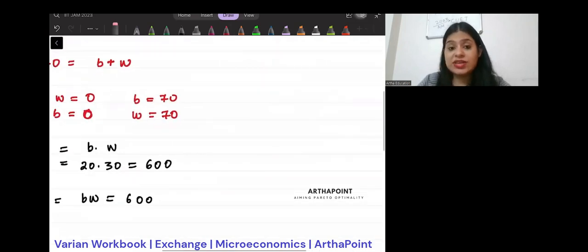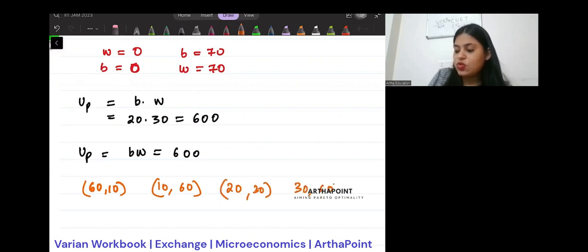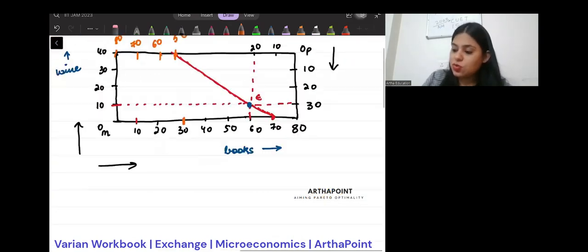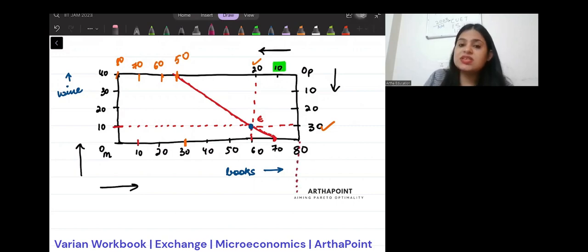What are those bundles that can give you a utility of 600? 60 and 10. 10 and 60. 20, 30. 30, 20. If I were to plot utility at point E, we know it is 600. We are getting this 600 from the bundle 20, 30. I can also get the same utility from 10 and 60 also. When he has 10 units of books, he would need 60 units of wine to get a utility of 600. This point is on the same IC as this point.